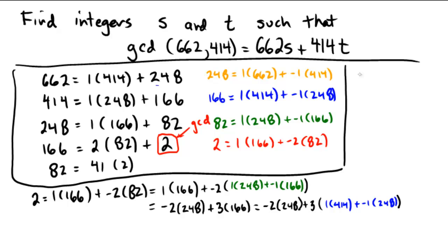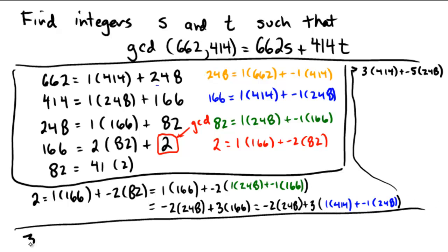Distributing and collecting like terms again, it looks like I'll have 3 copies of 414, and then negative 3 from the distributive property plus negative 2, so plus a negative 5 times 248. Now my last step is plugging in that quantity. So I have 3 times 414 plus negative 5 times 248, and 248 is given by the orange quantity of 1 times 662 plus negative 1 times 414.